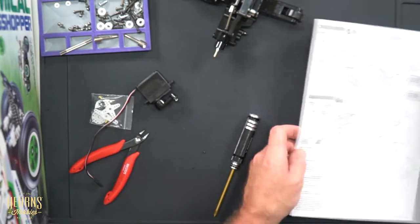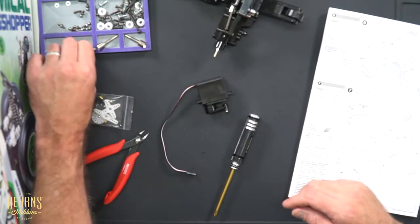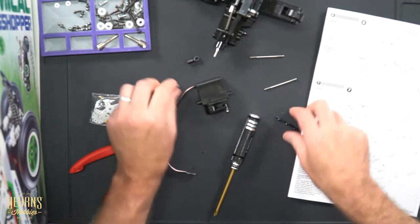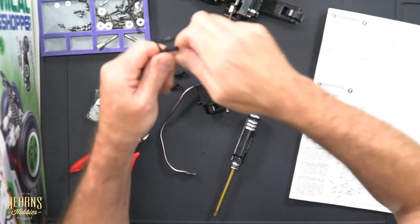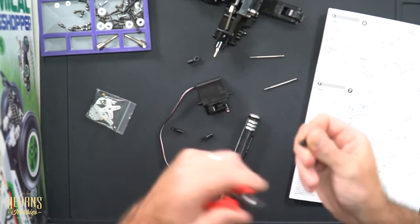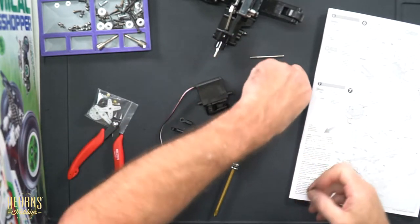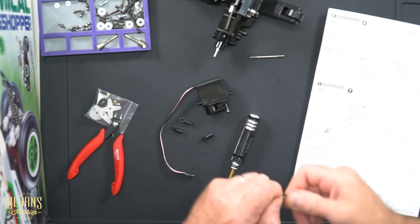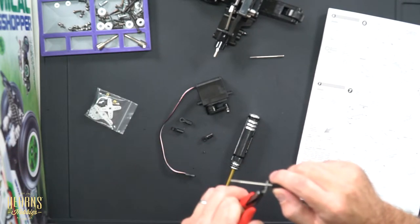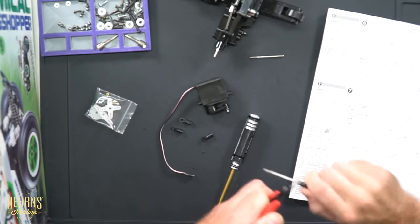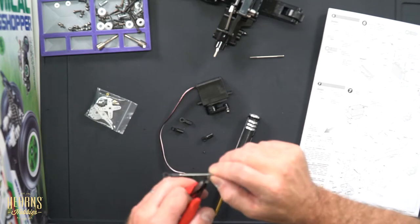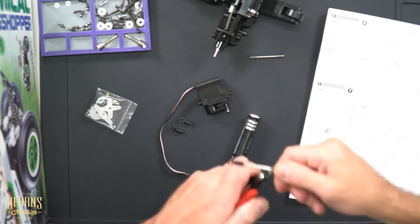Now let's move over to step six. Step six is asking me for the turnbuckle ends, which we've got right here. I've got some ball cups. Get these off the parts tree, clean up the flashing. These Nine Steps nippers are working flawlessly on this kit. I'll go ahead and thread these on.